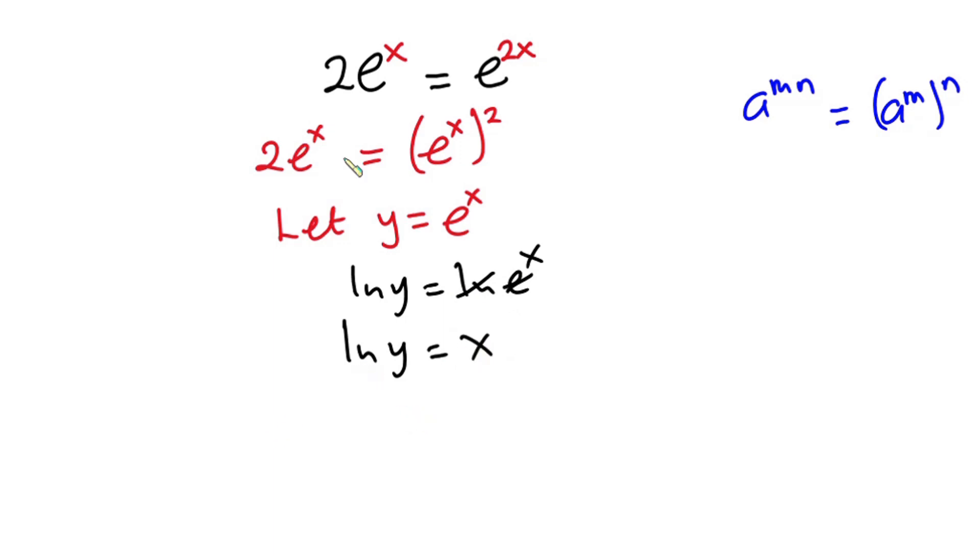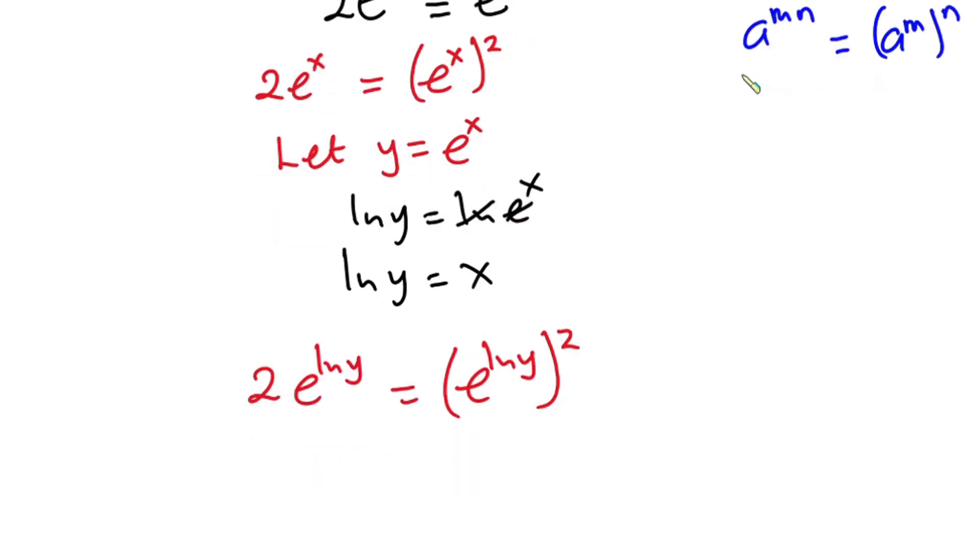Now, substituting x into this equation, we have 2 times e to the power natural log of y is equal to e to the power natural log of y or to the power 2.